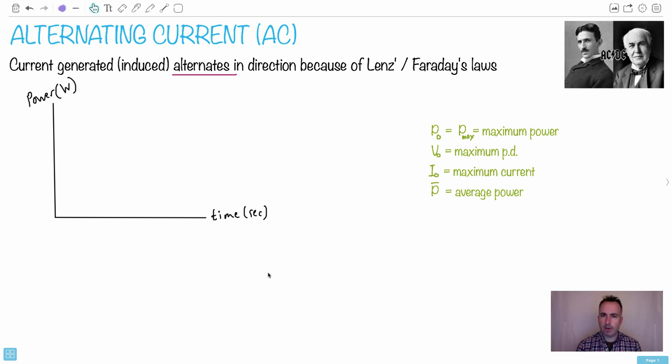So the current generated - remember we've been talking about induced currents, well induced potential difference, but of course that means you get a current. And now the current alternates in direction because of Lenz's law and Faraday's law, which means when we generate electricity, it's going to be generated in an alternating manner.